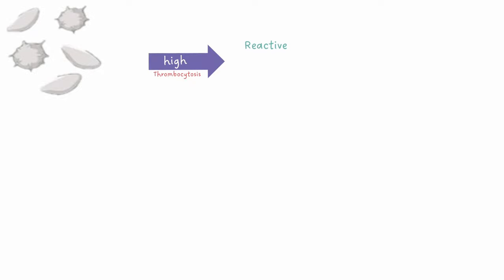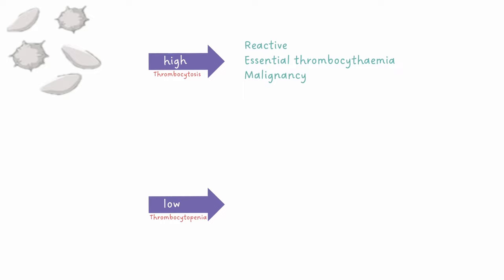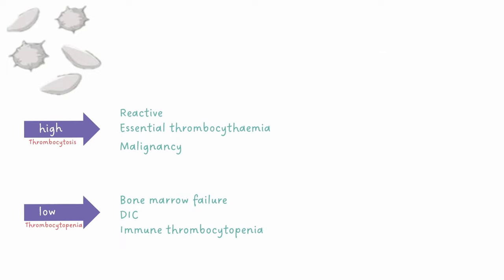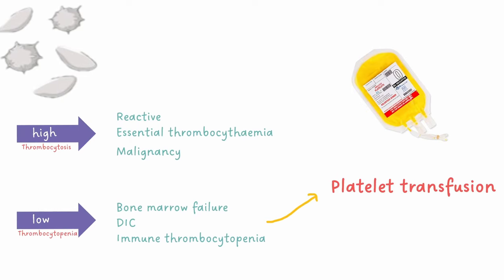Finally, we have platelets. Thrombocytosis can be reactive, meaning the platelets increase in response to infection or inflammation. We can also have essential thrombocythaemia, which is another type of myeloproliferative disorder, and underlying malignancy. Thrombocytopenia can be caused by bone marrow failure, DIC, or immune thrombocytopenia, which is an autoimmune disease. If platelets are low enough, or if there is concurrent bleeding, the patient may require a platelet transfusion. However, transfusing platelets in a patient with immune thrombocytopenia will not be a good long-term solution, as the patient's own immune system will continue to destroy platelets.